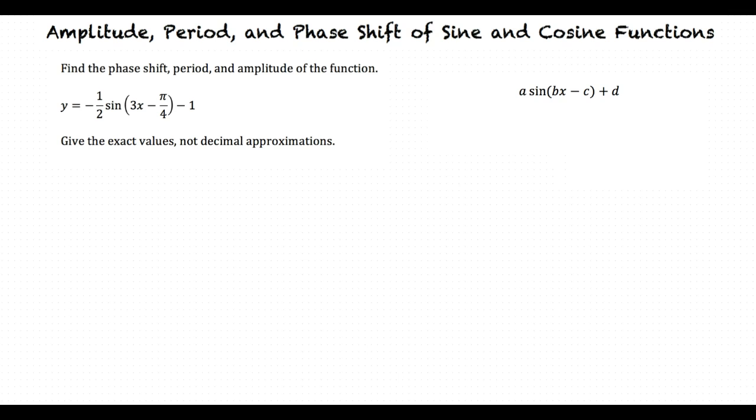The function is of the form a sine of bx minus c plus d. First, let's define the variables. a equals negative one-half, b equals 3. What is c and d? c is π over 4, d is negative 1. Correct.